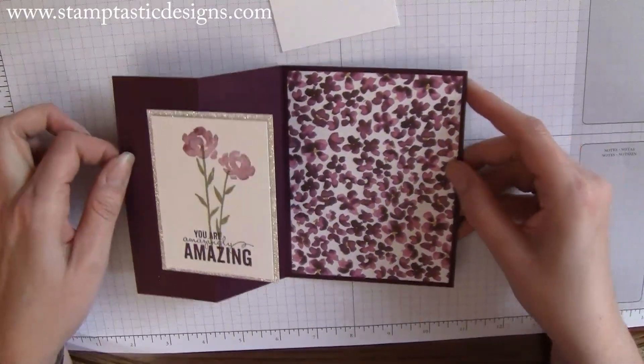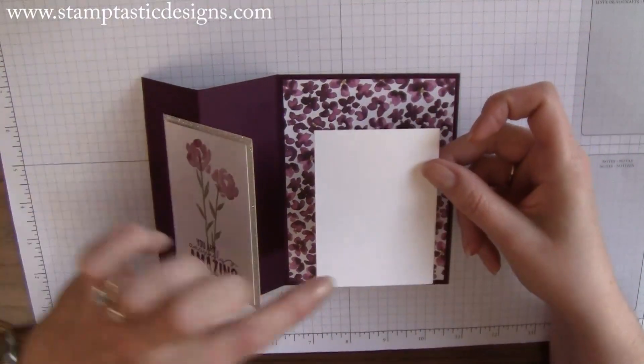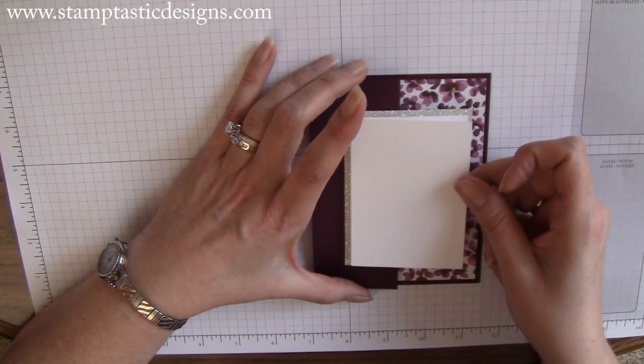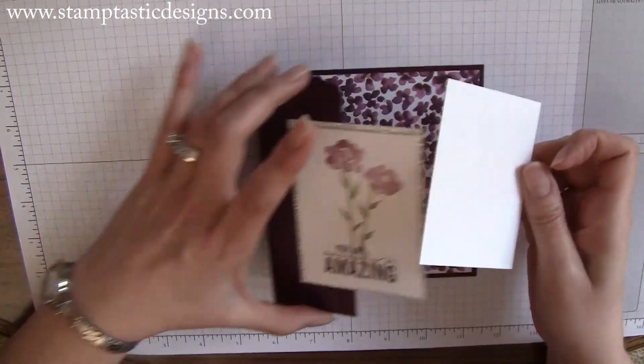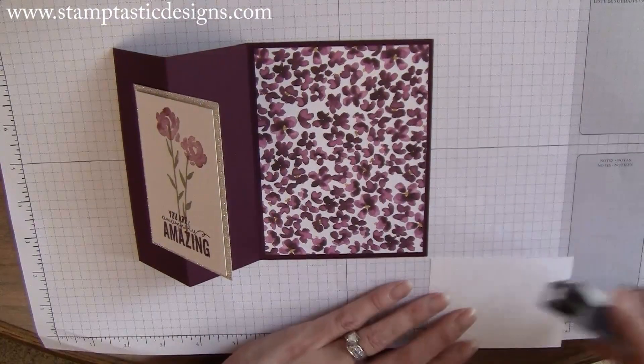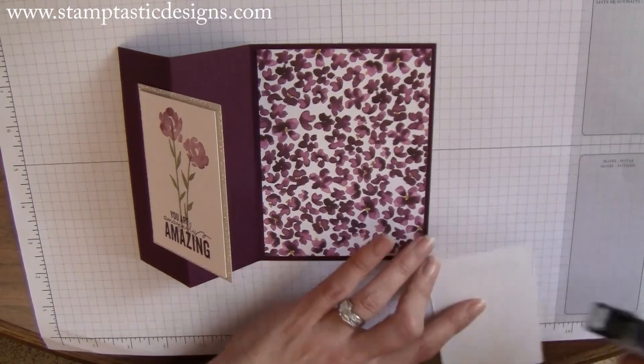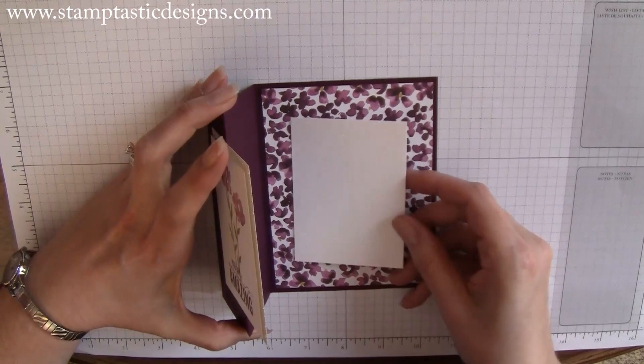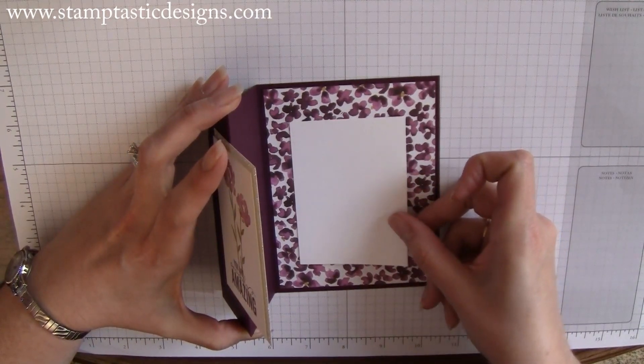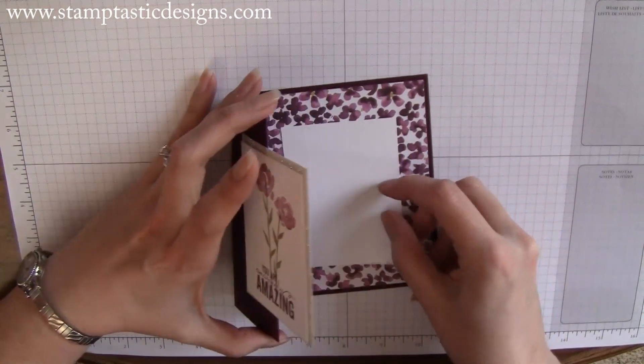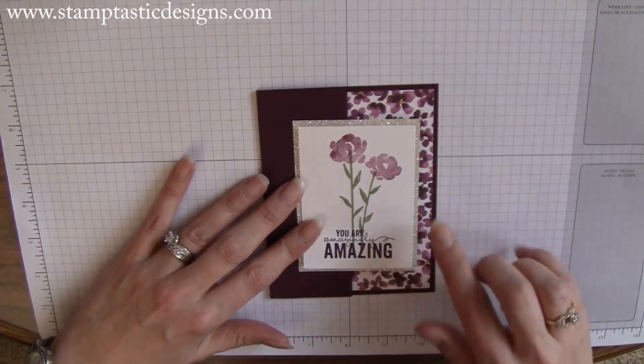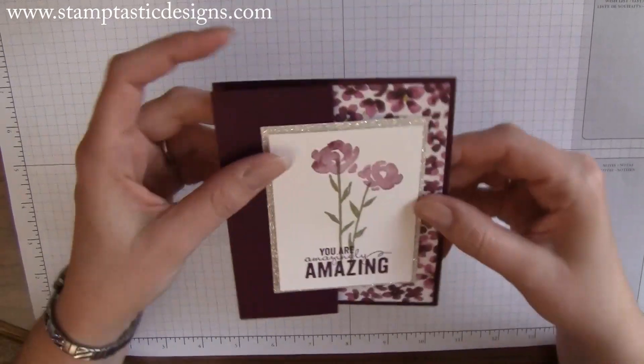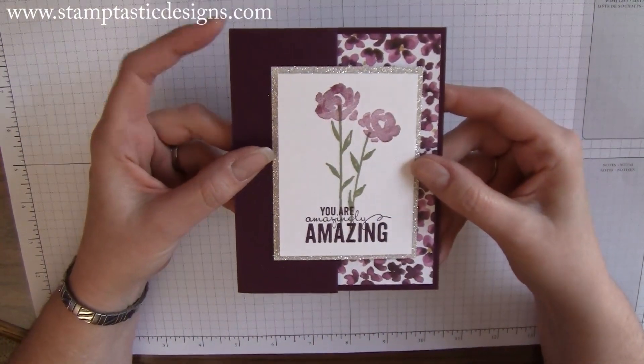The last thing I did is cut another piece of paper to the exact same size, two and three quarters by three and three quarters, to put on the inside of the card. This gives me a place to write a greeting or whatever I want. I'm just going to adhere that there. It fits right behind, so nobody will notice that piece when they pull the card from the envelope.